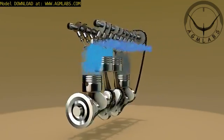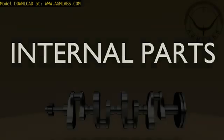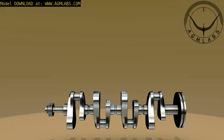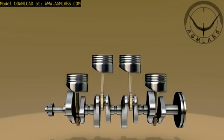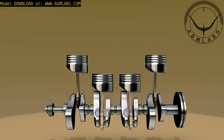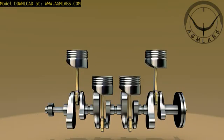Let's take a look at the basic internal parts of a four-stroke engine. Inside the engine block, there is a crankshaft. Piston rods are attached to the crankshaft. Pistons are attached to the piston rods. As the crankshaft turns, it causes each piston to move up and down.